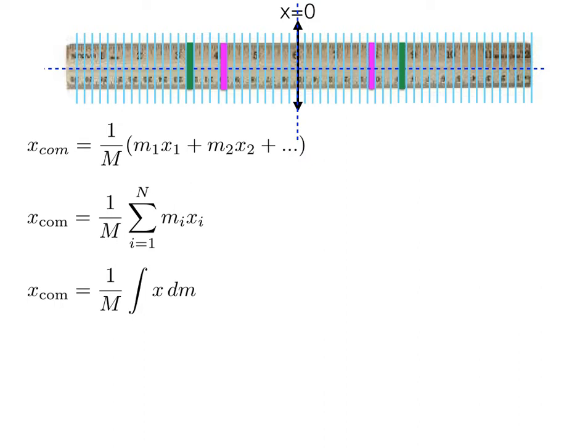It's saying that we should take each bit of mass dm and multiply it by the distance x it is away from the origin. The integral adds up all of those products, much like the summation in the previous equation, and then finally the whole thing is divided by the total mass.